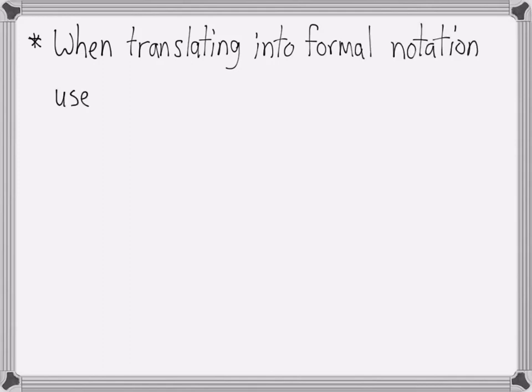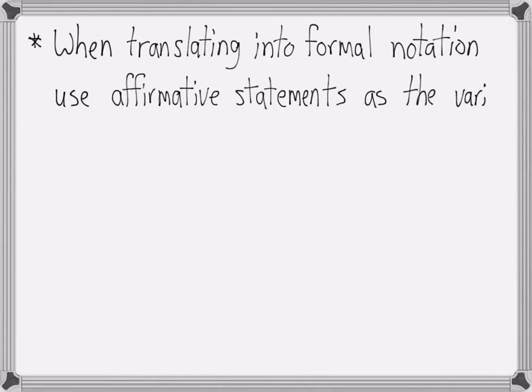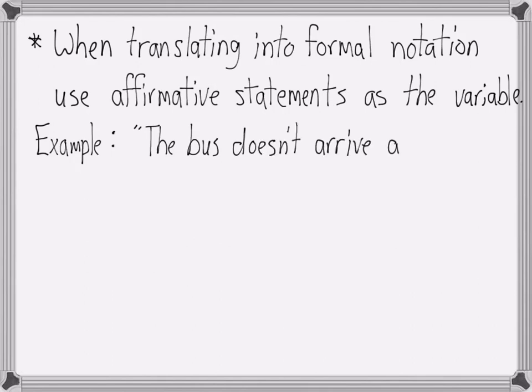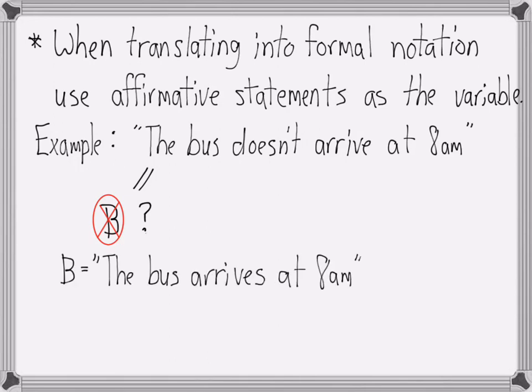Whenever translating sentences into formal notation, we will use the affirmative statements as the variable. For example, for the statement 'the bus doesn't arrive at 8am', we could just call the entire statement b. We won't do that. Instead, we'll let the variable b stand for 'the bus arrives at 8am'. That's an affirmative statement.